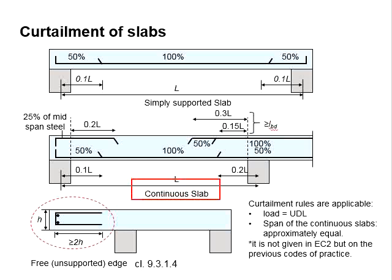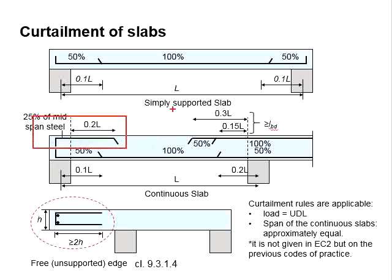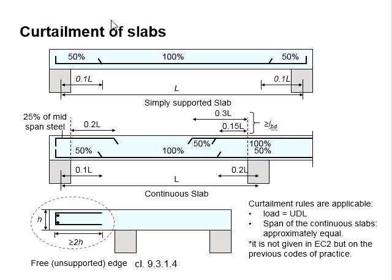For the continuous slab, 15% of the reinforcement bar has to extend from 0.2L from the mid of the support. The amount of reinforcement bar is similar to the simply supported slab. However, top reinforcement bar is also required. At the end support, you will require at least 25% of the reinforcement bar at mid-span, and it may be cut at 0.2L from the surface of the support.